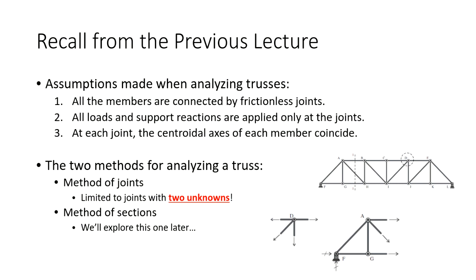We've been talking about trusses for the last couple of lectures. Keep in mind that all members are connected by frictionless joints, all loads and reactions are applied only at the joints, and the centroids all meet. That means each member experiences only axial loads — either tension or compression. To determine all forces inside a truss, we use either the method of joints or the method of sections. Wednesday we'll discuss sections, but method of joints has a lot to cover because we often solve the entire truss for deflections or influence lines.